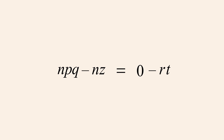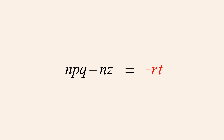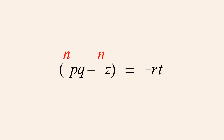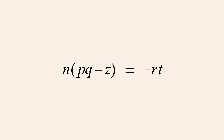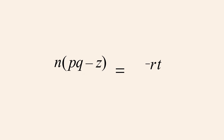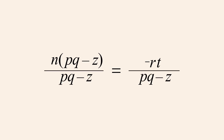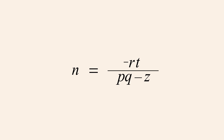The zero on the right can also be eliminated, leaving the term negative rt. To end up with the variable n alone on the left side, we must combine the n's contained in the two terms on the left. This can be accomplished by placing the two terms in parentheses and then using the distributive property to bring the common factor n outside the parentheses. We must now eliminate the terms in parentheses on the left so that the variable n is alone. Dividing both sides by the terms in parentheses, we cancel those terms in the numerator and denominator of the fraction on the left, leaving only the variable n on the left side.